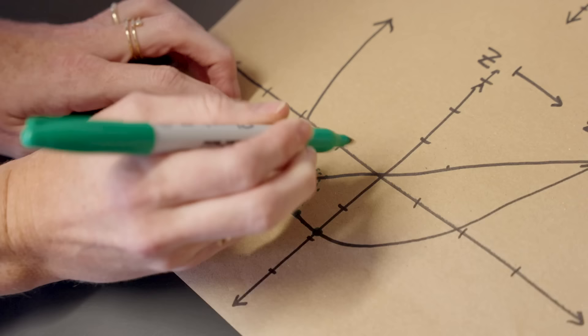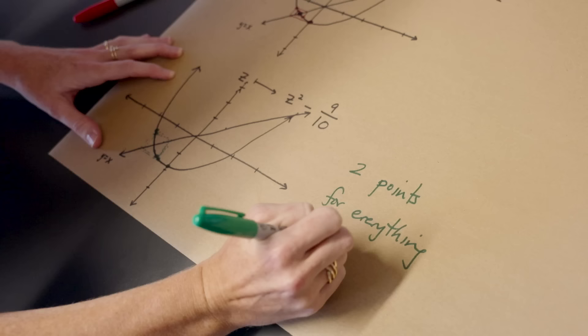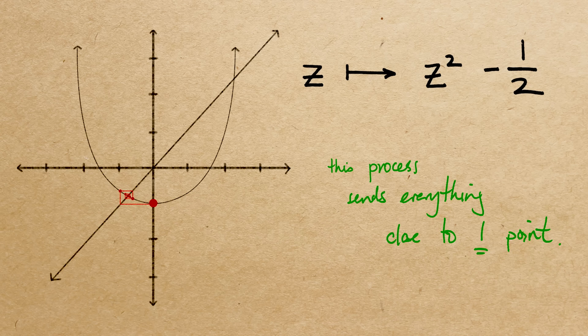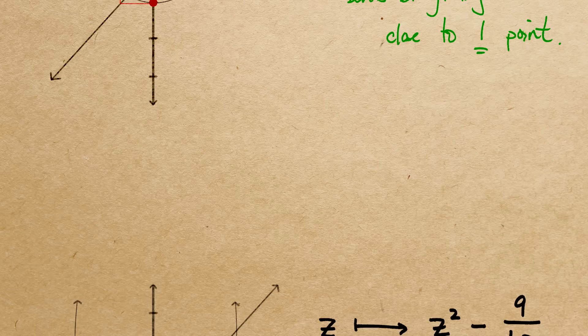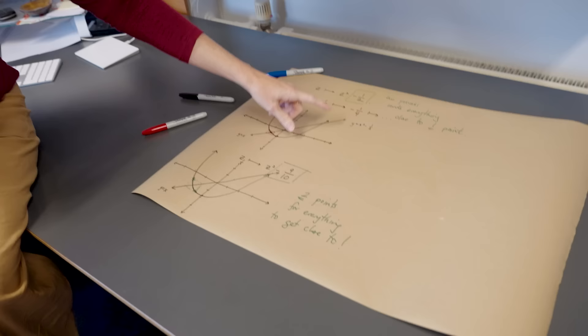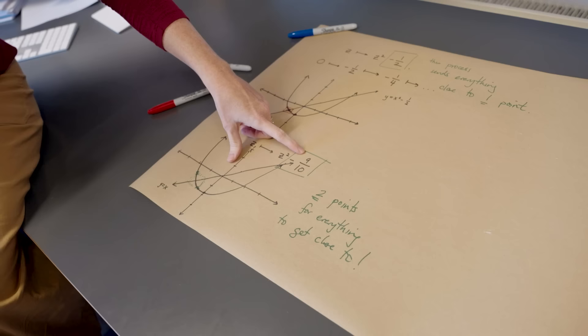So two points for everything to get close to. So one point for minus one half, and two points for nine over ten. Anytime you do this procedure, where you take some value here and you look at what happens to zero, it's possible that there is some finite list of numbers, or of points in the graphical picture, where everything is coming in towards one of those finite list of points.